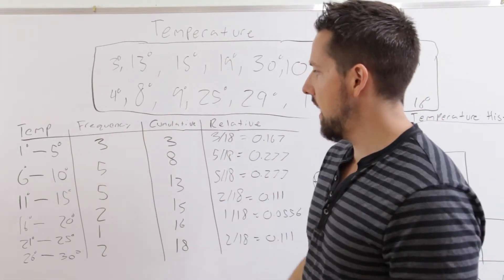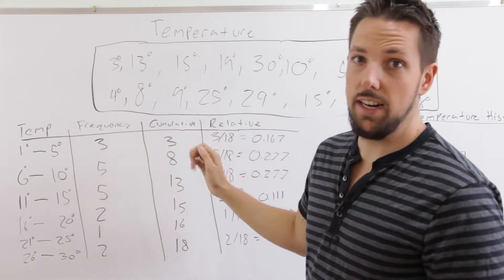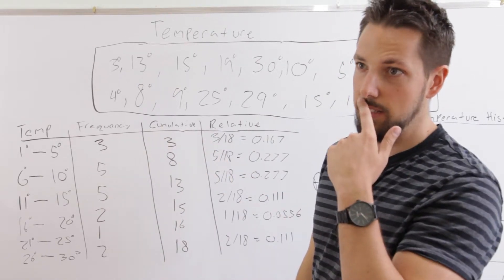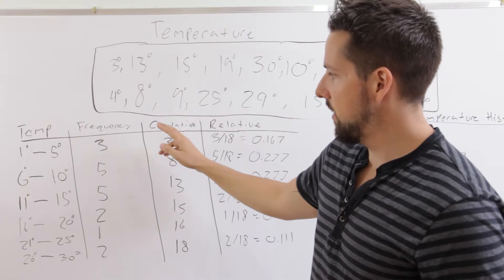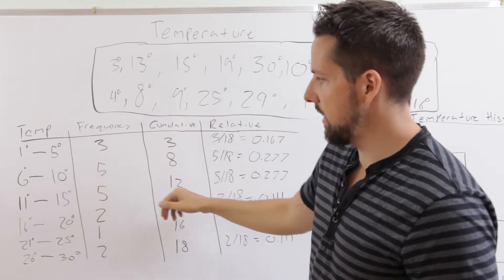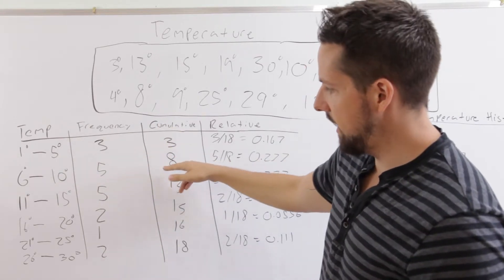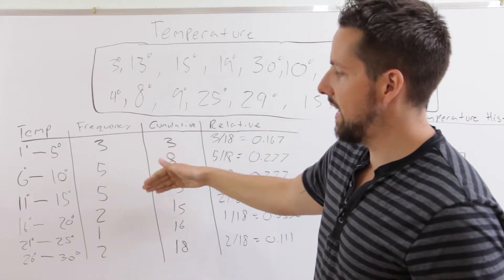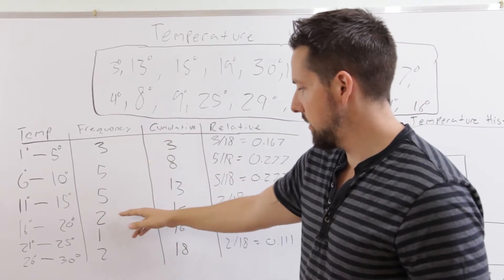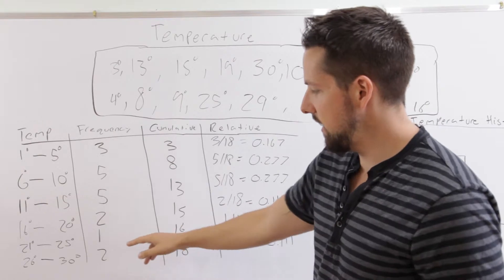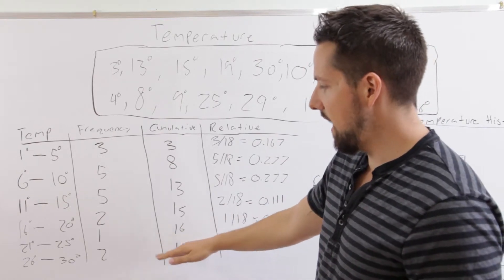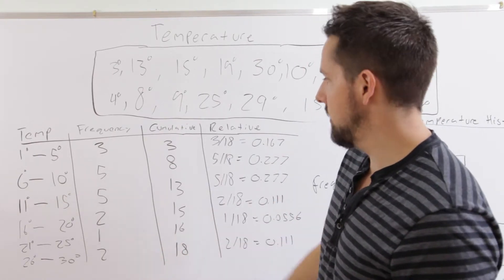We have the frequency here, and now we do the cumulative. Remember, that's a running tally of all the previous data. So we have three in the first one, five in the next one. At this point, we have eight data points. At this point, we have thirteen. We keep adding up the previous ones. At this point, we have fifteen, sixteen. And then finally, the last data always contains all the points, so it's eighteen.